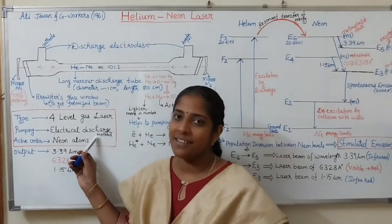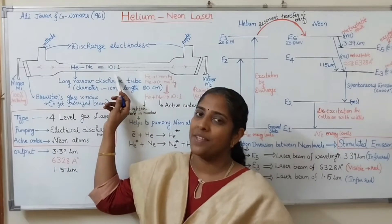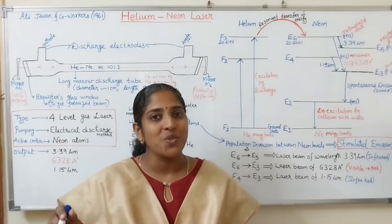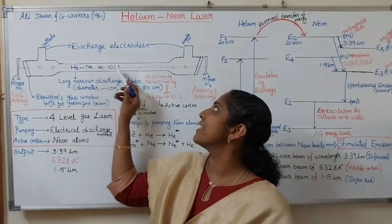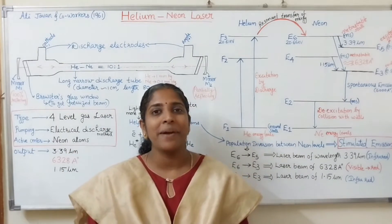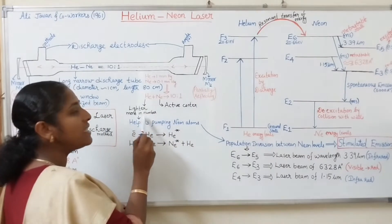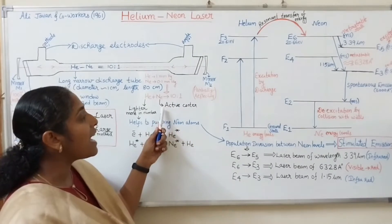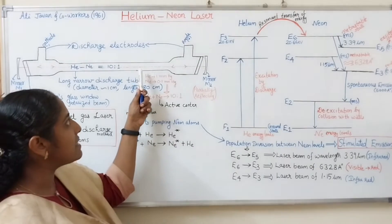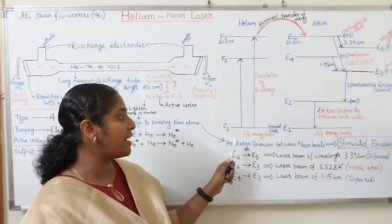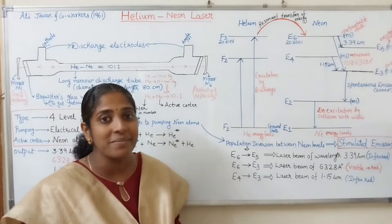The pumping method used here is electrical discharge method. When the switch is on, a high voltage is applied across the gas mixture. As a result, the gas atoms start to ionize, providing fast-moving electrons and ions. These electrons and ions are accelerated towards anode and cathode respectively, then collide with the helium and neon atoms and excite them to higher energy states. Since helium atoms are lighter and more in number (ratio 10:1), electrons can easily excite helium atoms from the ground level to higher energy levels F2 and F3.